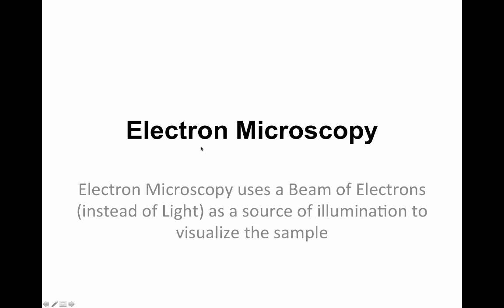Electron microscopy uses a beam of electrons instead of a light beam as a source of illumination to visualize the cell sample, in that way achieving greater resolution than light microscopy.